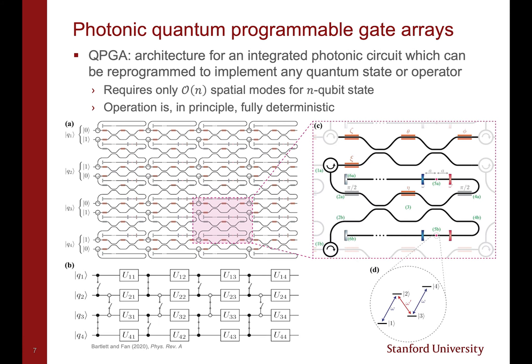To address these difficulties, we proposed a device which we call a quantum programmable gate array. This is an architecture for an integrated photonic circuit which can be dynamically reprogrammed to implement any photonic quantum state or operator without hardware modifications. The use of embedded quantum emitters in the device allows for one to efficiently encode qubits using O(n) spatial modes, and the operation of the device is, in principle, fully deterministic.